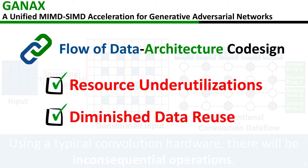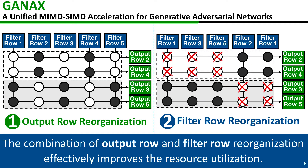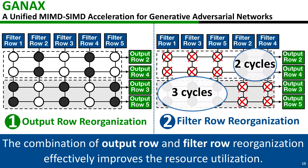To solve these challenges, we take a dataflow and architecture co-design approach. While our proposed dataflow optimizations improve resource utilization and reclaim data reuse, it raises another challenge: the disparity between the number of cycles for calculating output rows breaks the SIMD model, and it seems the MMD model is inevitable.